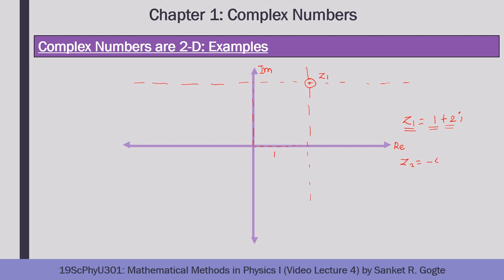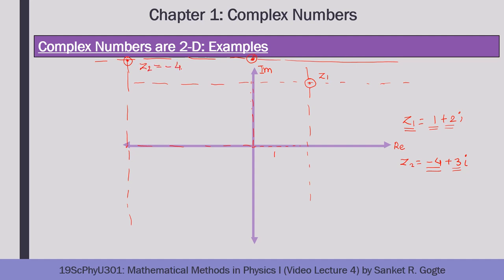Let's consider z2 = −4 + 3i. Can you guess which quadrant this lies in? It lies in the second quadrant. To plot it, we move a distance of 4 towards the negative real axis, draw a line parallel to the imaginary axis, then move 3 units along the positive imaginary axis and draw a line parallel to the real axis. Wherever these two lines meet is the complex number z2 = −4 + 3i.